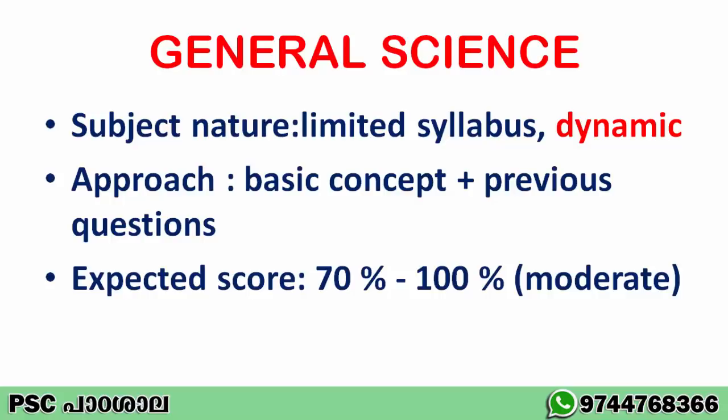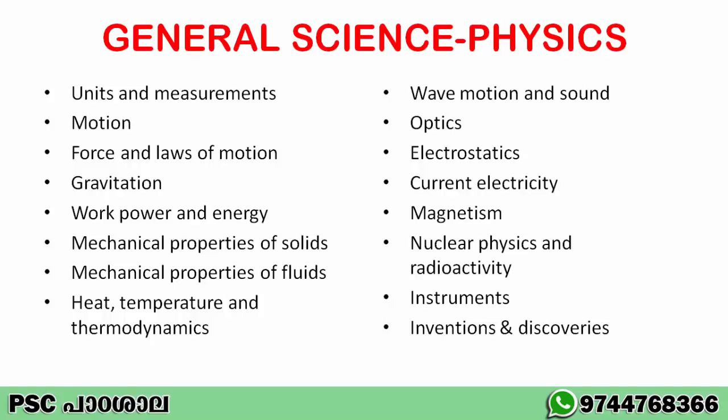You can expect questions from different areas. The expected score for general science is from 70% to 100%. Even in very difficult level question papers, that is the kind of target you have to set for the general science section. Now let's see what are the main topics to prepare from physics.